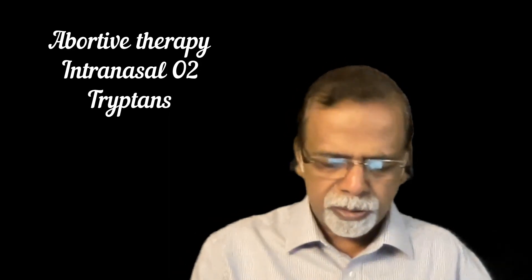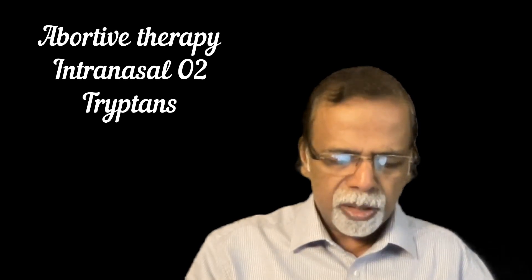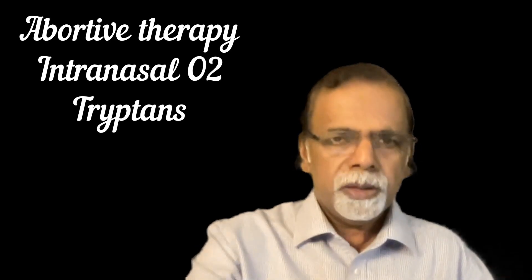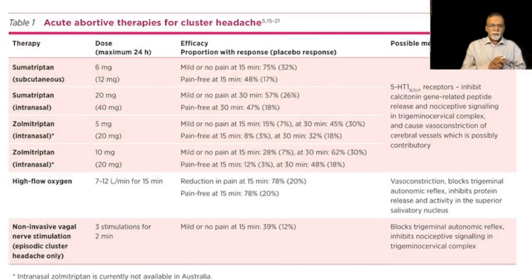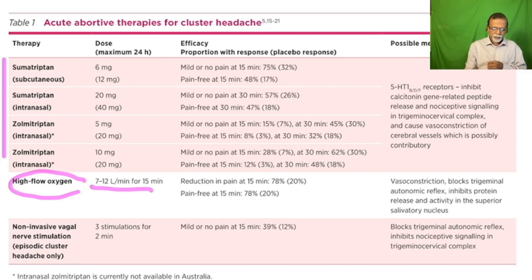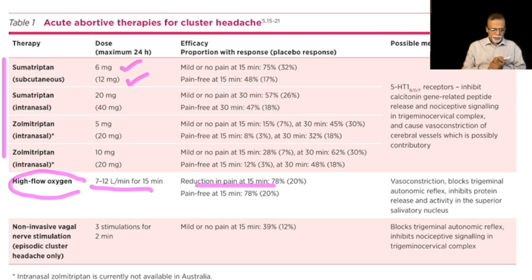The two first-line acute treatments are high-flow oxygen and subcutaneous sumatriptan. Oxygen can be given at a rate of 5 to 15 liters per minute. Sumatriptan 6 mg subcutaneously is used, with a maximum dose of 12 mg per 24 hours. Other triptans like zolmitriptan can also be given intranasally. High-flow oxygen at 7 to 12 liters per minute for 15 minutes shows pain reduction in 78 percent of cases. Non-invasive vagal nerve stimulation can also be given in some episodes.